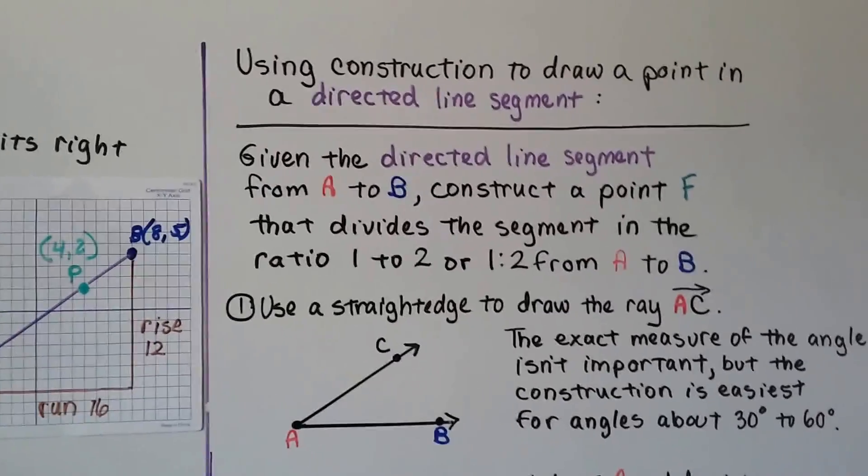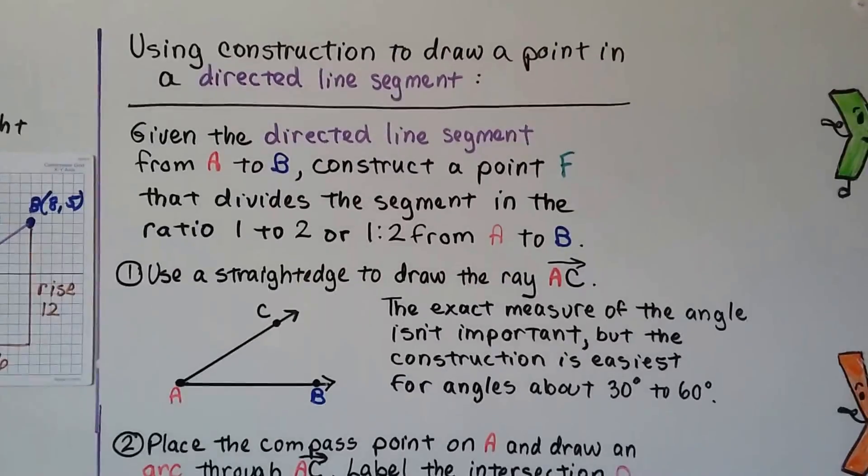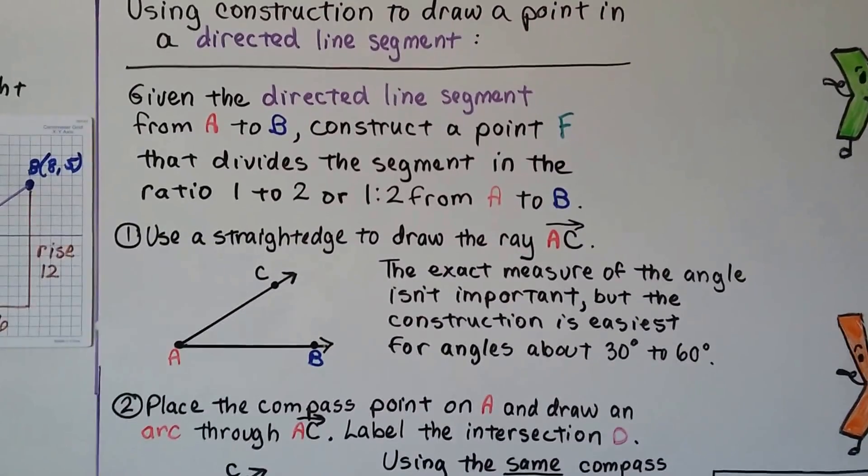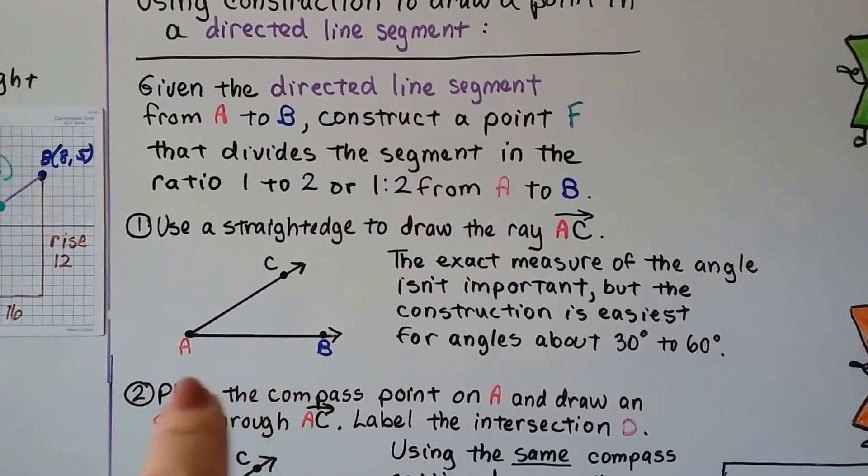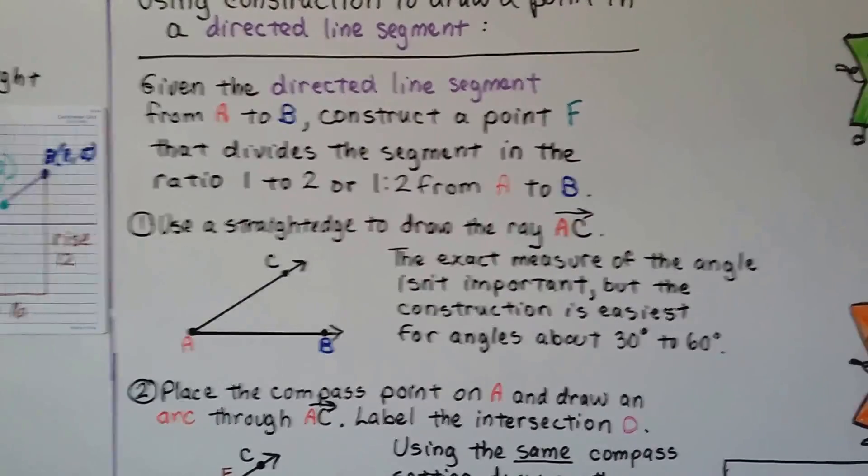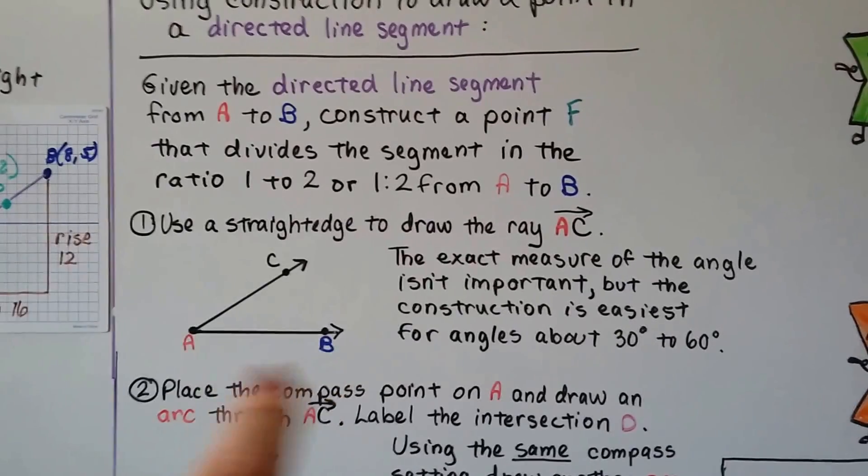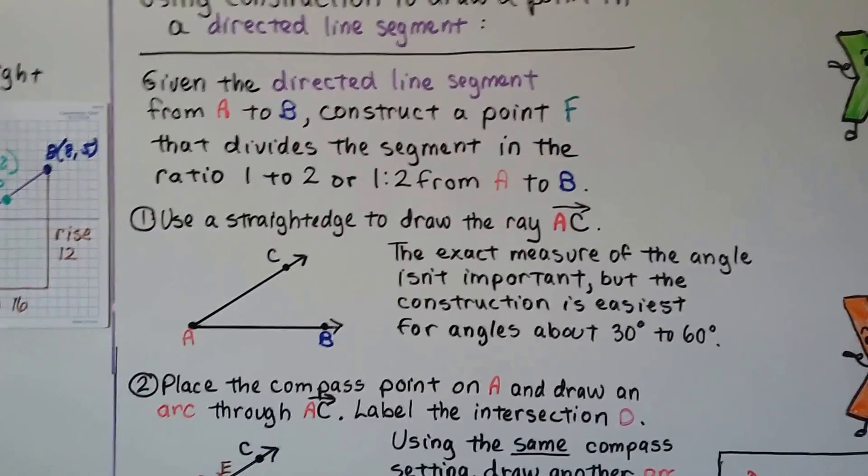Now I hope you have a compass and a straight edge handy, because we're going to be using construction to draw a point in a directed line segment. And given the directed line segment from A to B, we're going to construct a point F that divides this segment into the ratio 1 to 2. We can also write it like this, 1 to 2, from A to B.